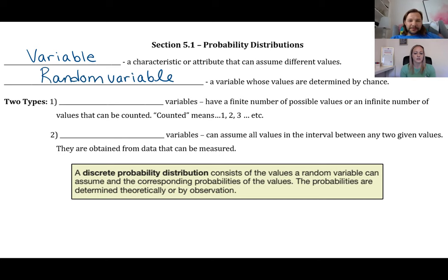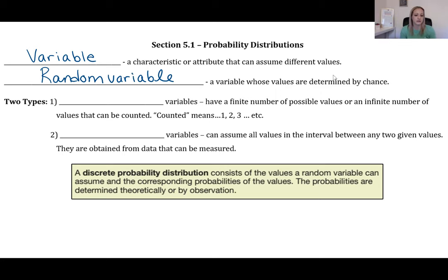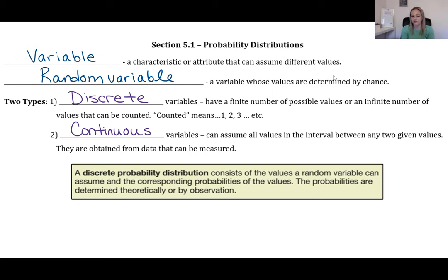Back in chapter one we defined two types of variables. Discrete variables have a finite number of possible values or an infinite number that can be counted using numbers one, two, three, and so on. Continuous variables can assume all values in an interval between any two given values and are usually obtained from measured data. In chapter five we'll strictly focus on discrete variables; chapter six will cover continuous ones.